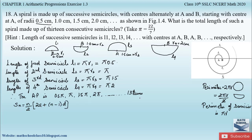We have to find the sum for 13 semicircles, so n = 13. The first term a = 0.5π. The common difference d = a2 − a1 = π − 0.5π = 0.5π. Let us substitute in the formula and find out the result.